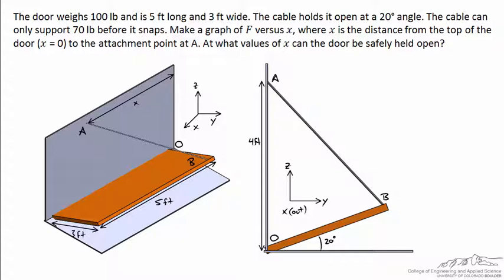To start this problem, let's begin with a free body diagram looking down the x direction, so we're going to look at the side of the door. In our free body diagram, we've got hinges down here and the hinges might act in some arbitrary vertical and horizontal direction. We don't care about that.